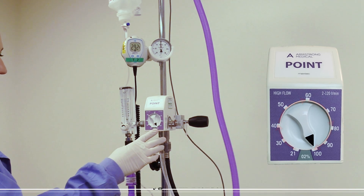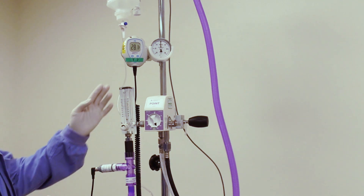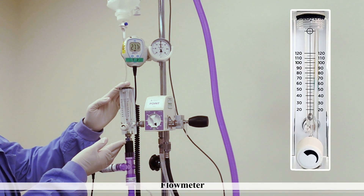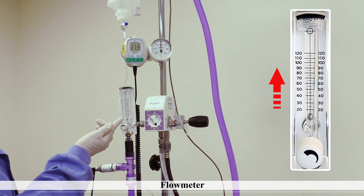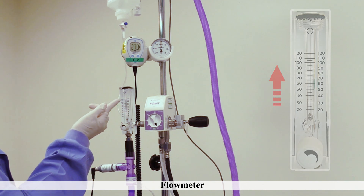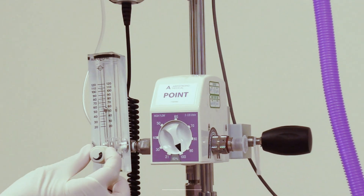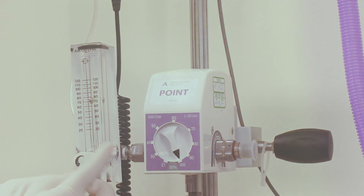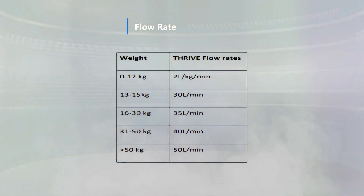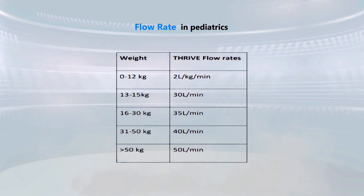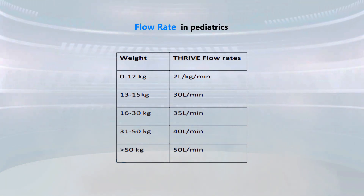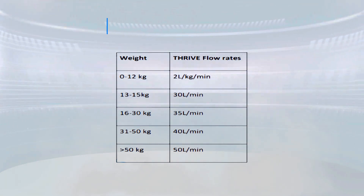Next is the flow meter, capable of delivering up to 120 liters per minute. For BiPAP mask ventilation, a flow rate between 80 to 120 liters per minute is utilized. For high flow nasal oxygen therapy, the recommended flow rate for children is provided in the table displayed on the screen, while for adults it is advisable to maintain a flow rate within the range of 50 to 80 liters per minute.